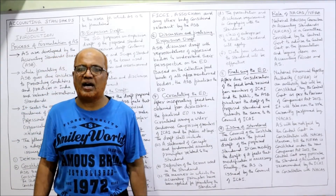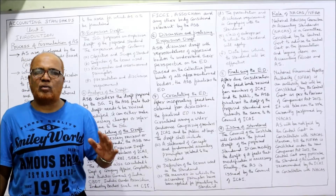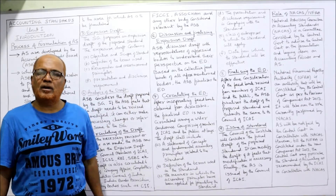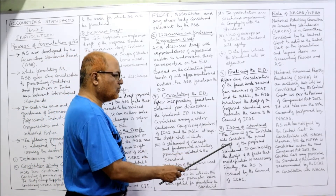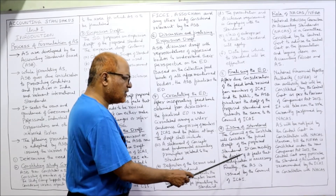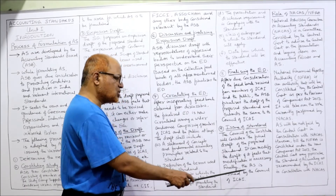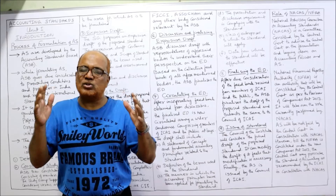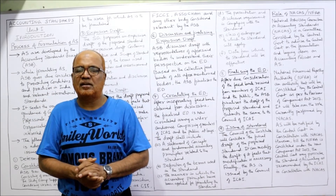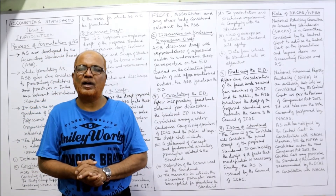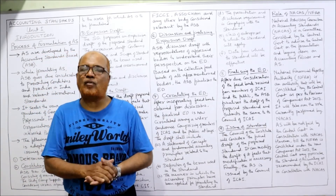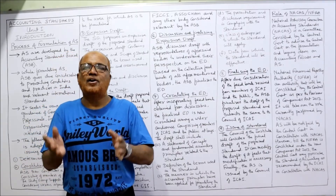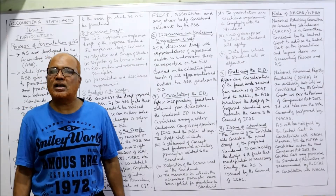The ninth and final step is the issuing of the standard. The standard is issued by the authority of the Council of ICAI. The council considers the final draft of the proposed standard. It can modify the draft if it feels modification is necessary. Finally, the accounting standard is issued by the Council of ICAI. These are the nine steps in the process of formulation of accounting standard — from determining the need to issuing the standard.